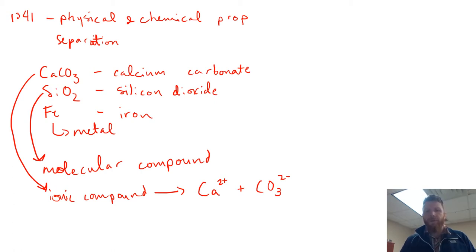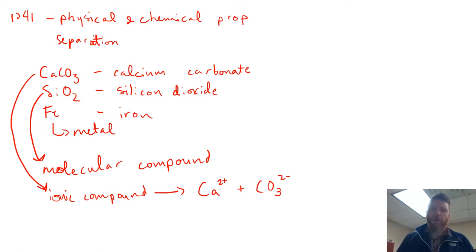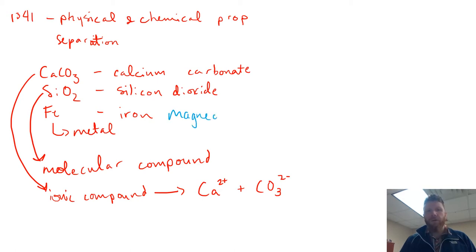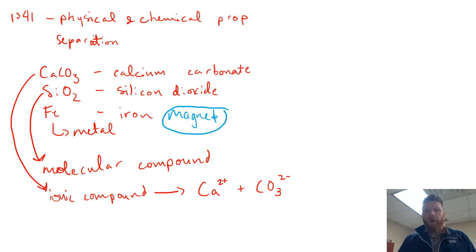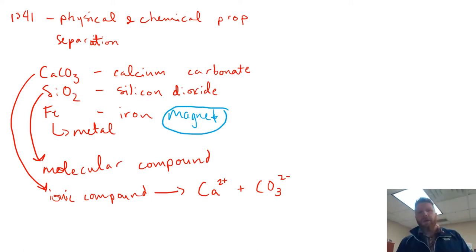You're going to be given a fairly homogeneous mixture of these three different things and you're going to have to separate them based on their physical and chemical properties. The first thing that you're going to use is a magnet. That magnet is going to basically control the movement of iron, while it will have no effect on CaCO3 and SiO2.